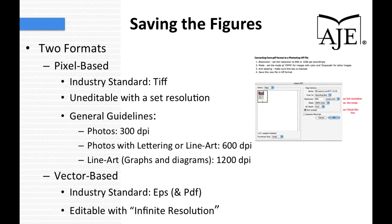The best way to save line art such as graphs is via a vector-based method. The industry standard for vector-based figures are EPS and PDF files. These files are editable, do not lose information over successive savings, and have practically infinite resolution. However, it's important to remember that once a graph is saved as a pixel-based file, that pixel-based file can never be resaved as a vector-based or editable file. In order to yield an editable file, it must be saved as an EPS or PDF directly from the program in which the graph was created.